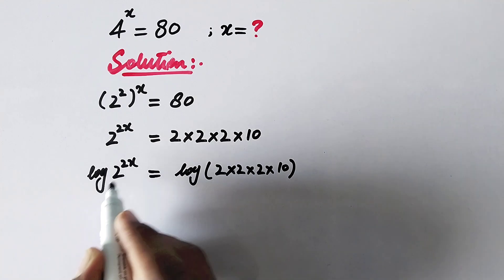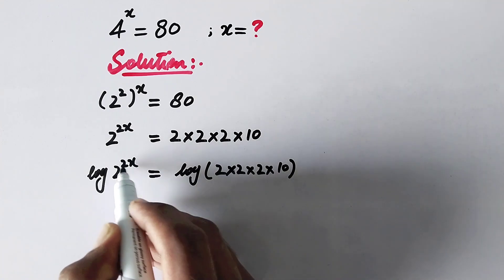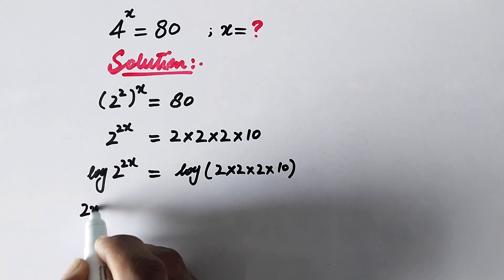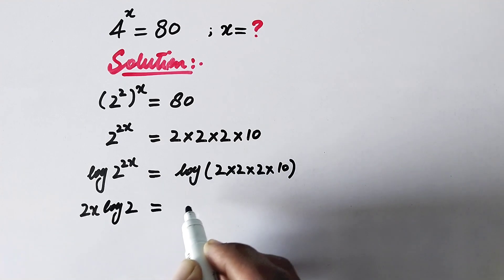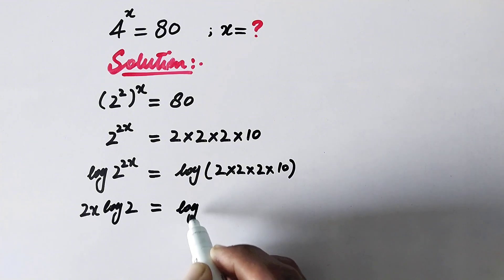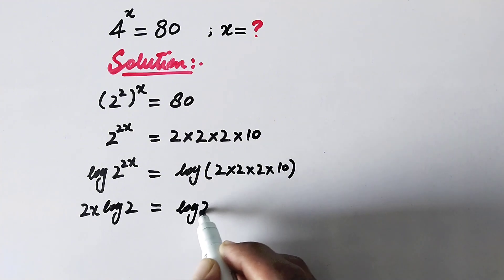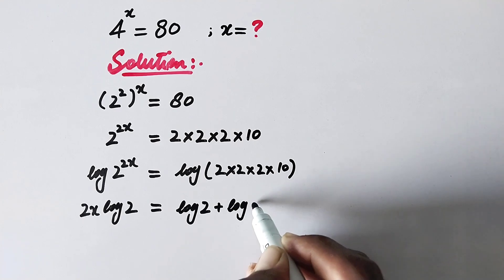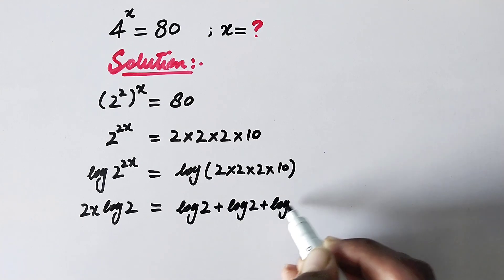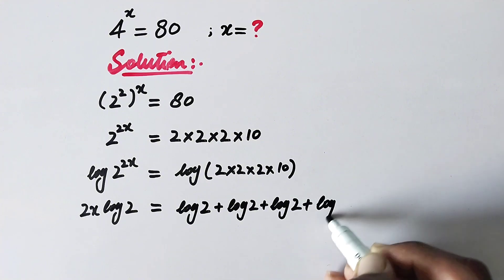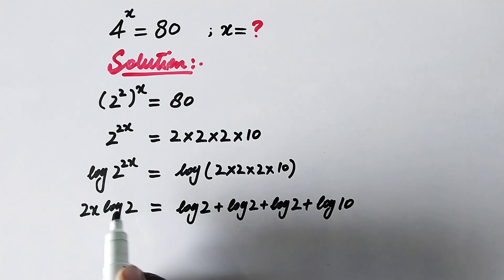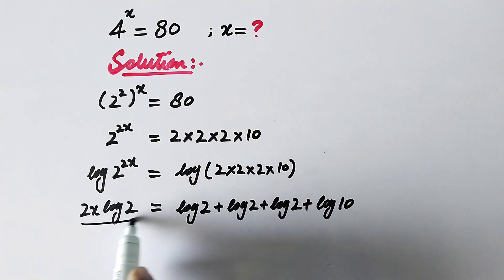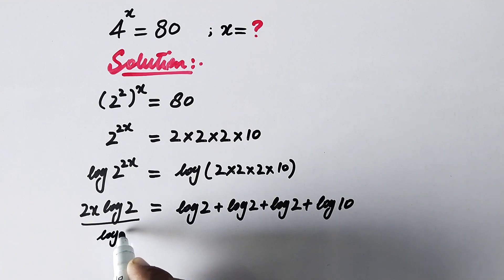As we know, it is a property of log that the power comes before the log. So here 2x times log of 2 is equal to log of 2 plus log of 2 plus log of 2 plus log of 10. Now since we have to find the value of x, we will divide both sides by log of 2.